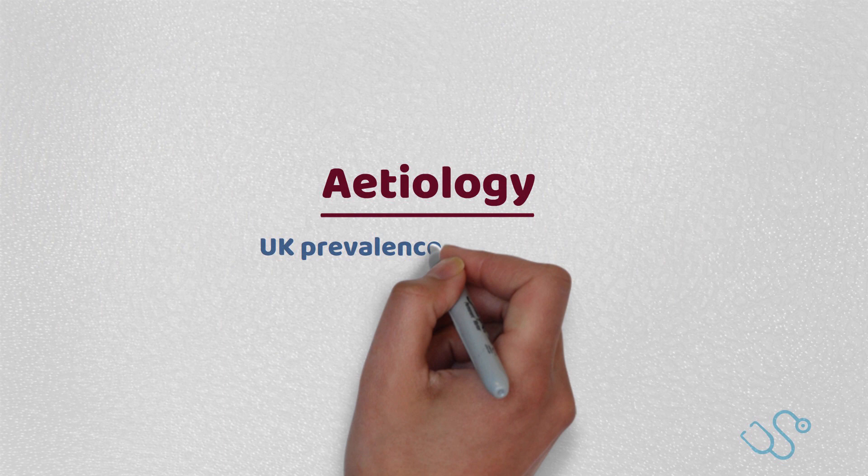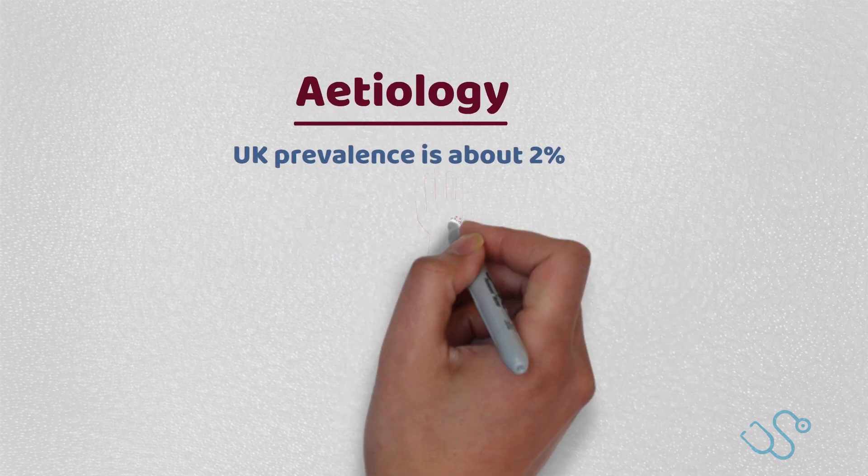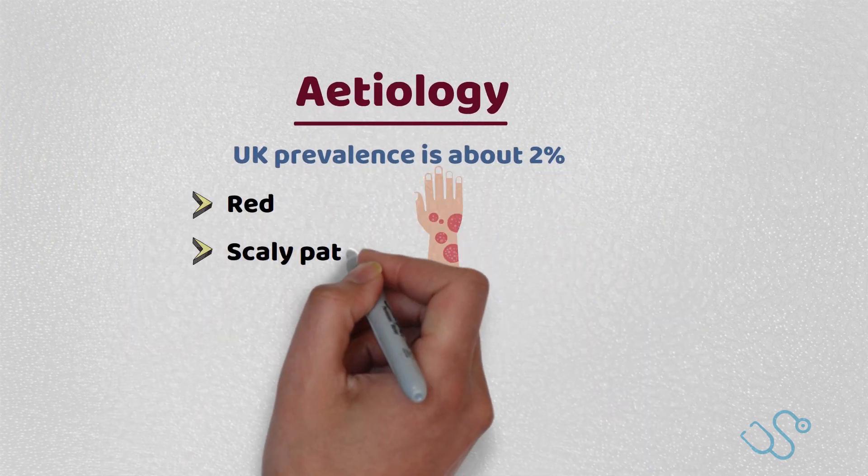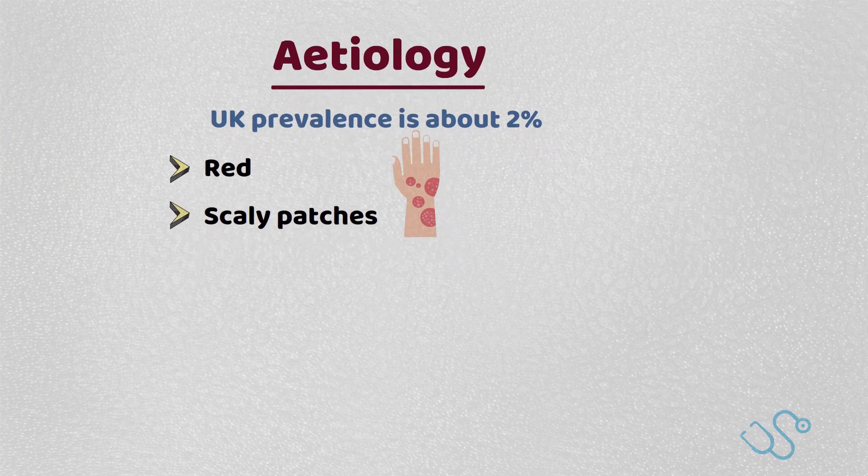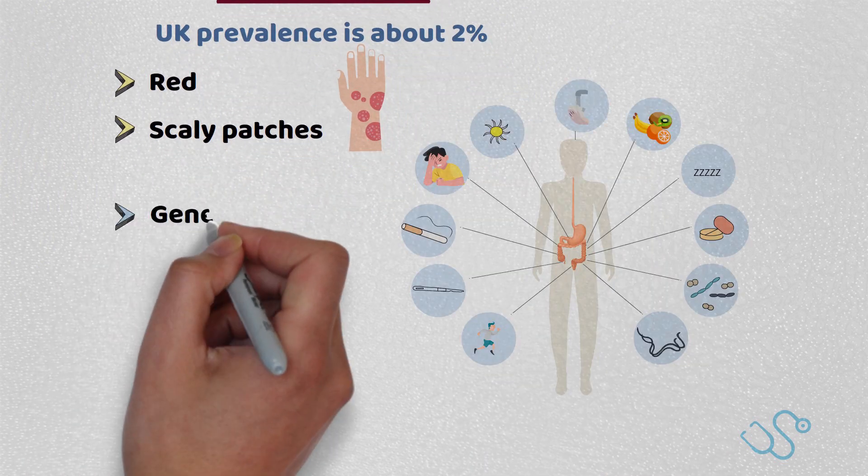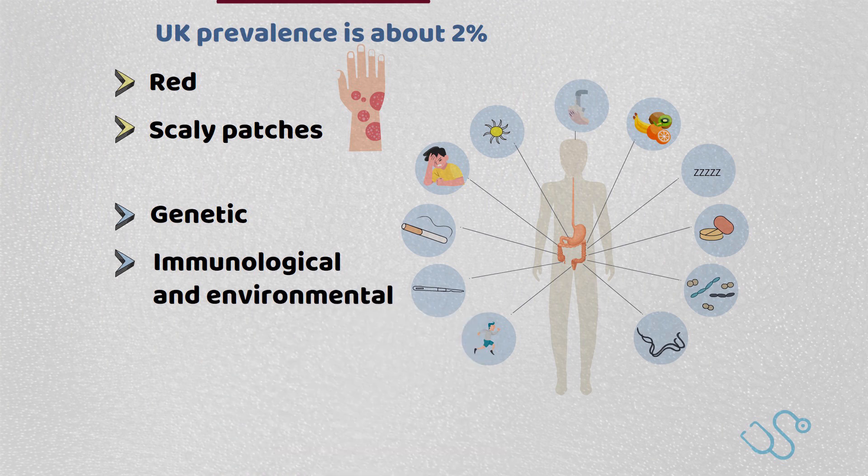The UK prevalence is about 2% and it generally presents as dry scaly patches, but there are significant links with arthropathy and cardiovascular disease. The causes of psoriasis aren't fully understood, but there is seen to be some genetic component, with immunological and environmental factors also involved.